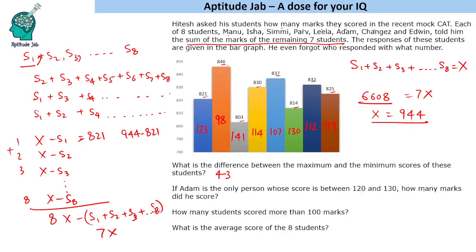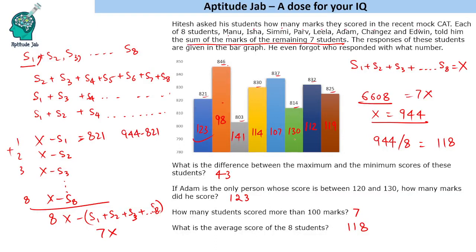If Adam is the only person whose score is between 120 and 130, there is only one such score: 123, so Adam scored 123. For how many students scored more than 100 marks: except one student, all 7 others scored more than 100. The average score of all 8 students is the total 944 divided by 8, which equals 118.